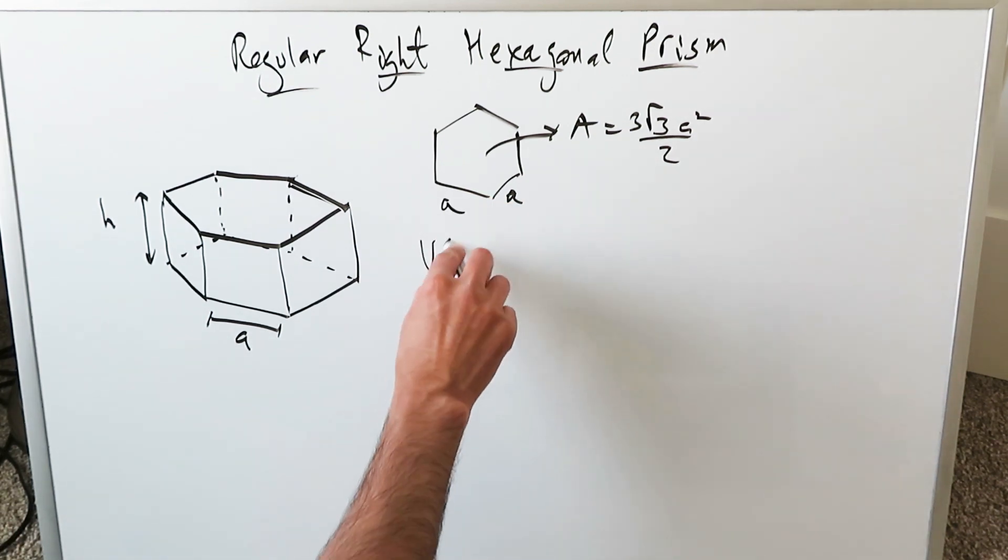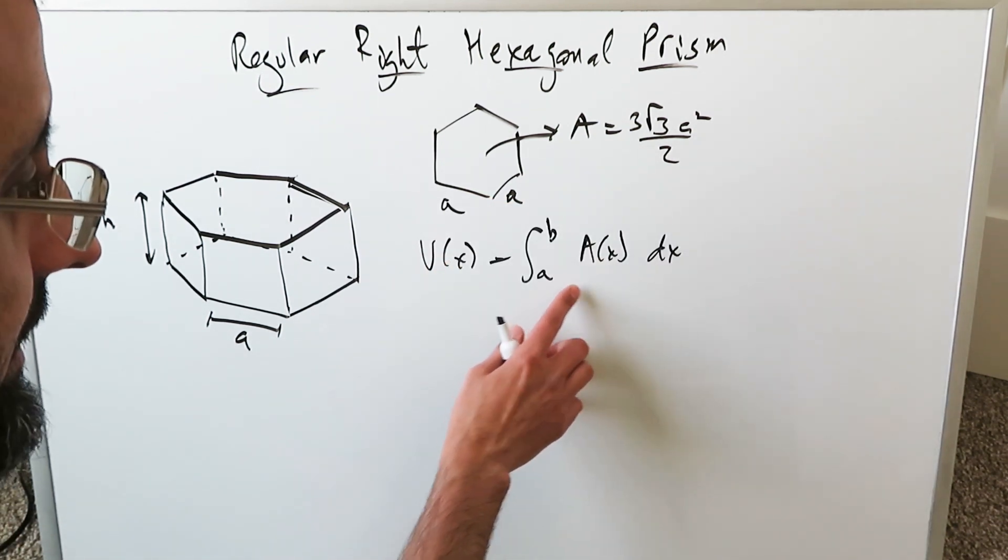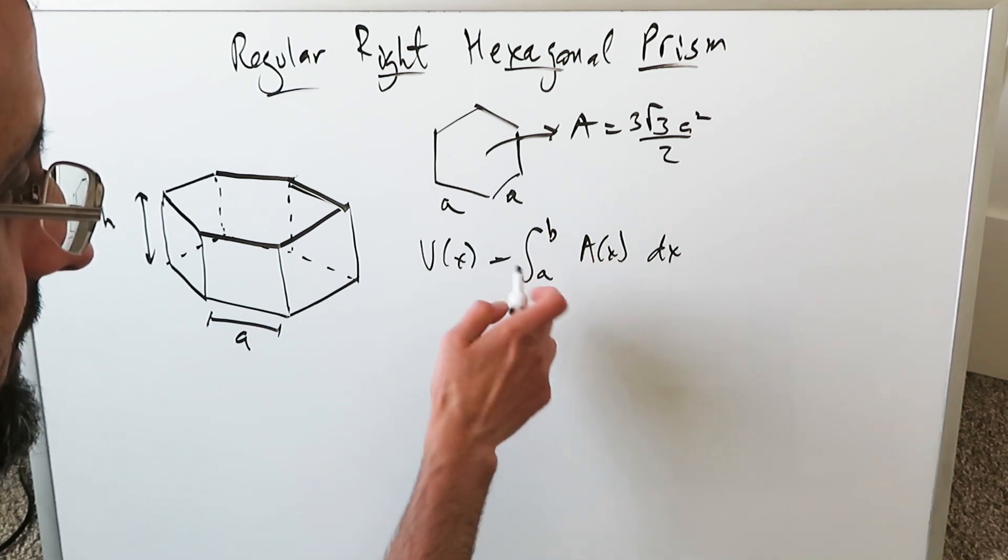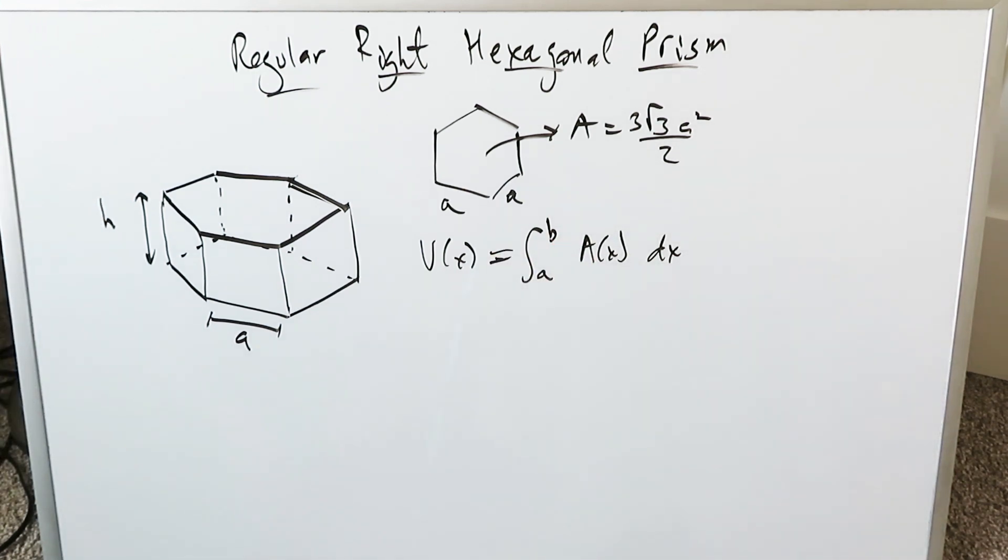If you're looking here at a volume derivation, you're essentially looking at your area integrating from your lower limit to your upper limit. Or you can think of it geometrically as this volume equals some area, area of the base times the height.